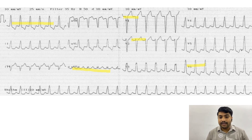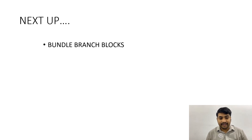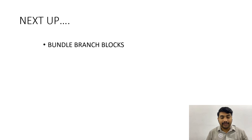I hope this cleared your concept of SVT with aberrancy. If you have any questions, please comment below and I will be happy to answer them. Next up we will have a very important discussion on bundle branch blocks, because they are the most common pathological findings in the emergency department. Older patients with ischemia often present with left bundle branch block, right bundle branch block, or fascicular blocks — so don't miss the next lecture.